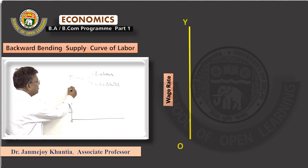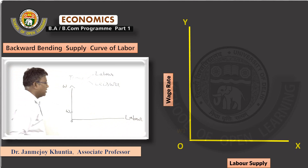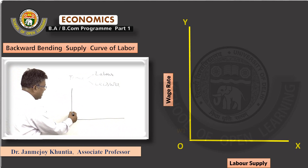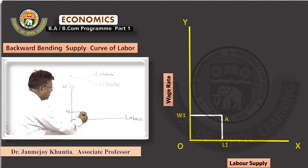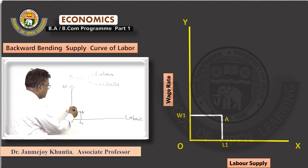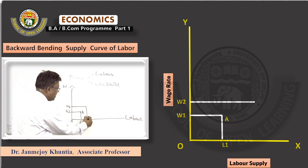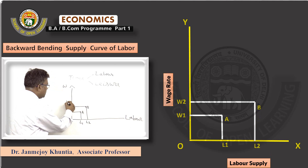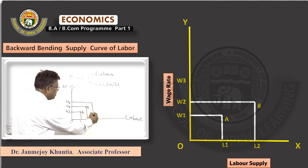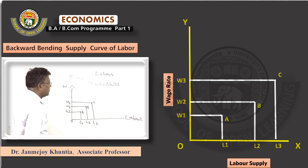We measure wage rate on the vertical axis and labour supply along the horizontal axis. Let us say that wage rate is W1; at W1, labour supply is L1 at point A. Wage rate increases to W2 and the supply of labour increases to L2 at point B. Further increase in wage rate to W3 leads to labour supply increasing to L3 at point C.